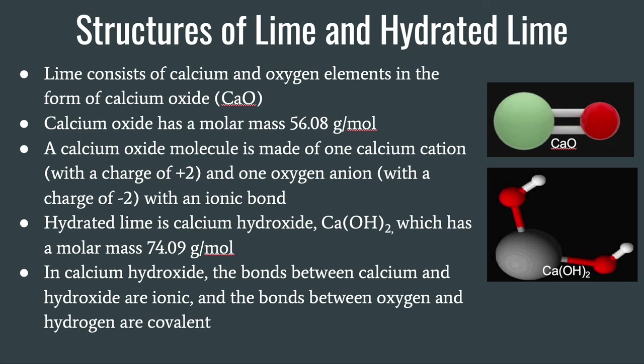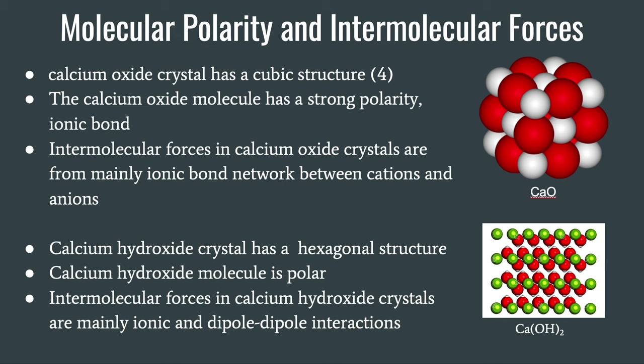In calcium hydroxide, the bonds between calcium and hydroxide are ionic, and the bonds between oxygen and hydrogen are covalent. Calcium oxide crystal has a cubic structure, and the calcium oxide molecule has a strong polarity due to this ionic bond. The intermolecular forces in calcium oxide crystals are mainly from ionic bond networks between cations and anions. The calcium hydroxide crystal has a hexagonal structure and is a polar molecule. The intermolecular forces in calcium hydroxide crystals are mainly ionic and dipole interactions.